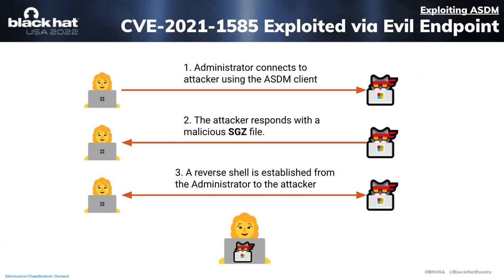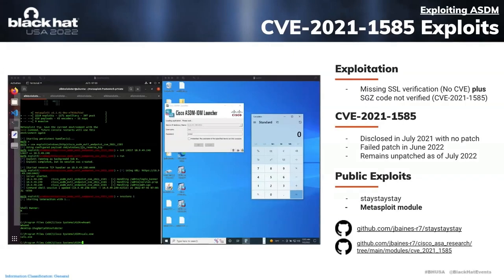The man-in-the-middle is a difficult position to achieve for most attackers, so it's also useful to note that CVE-2021-1585 is actually exploitable via evil endpoint. If HackerCat can trick an administrator to connect their ASDM client to an endpoint in HackerCat's control, HackerCat can provide the client with a malicious SGZ file resulting in code execution on the administrator system. I've actually written a couple of exploits for this, one of which is a Metasploit module. This talk emphasizes the use of real exploits — particularly Metasploit modules — to really hammer home that these are viable attacks that could be pulled off by low-skilled attackers and therefore should be taken quite seriously.